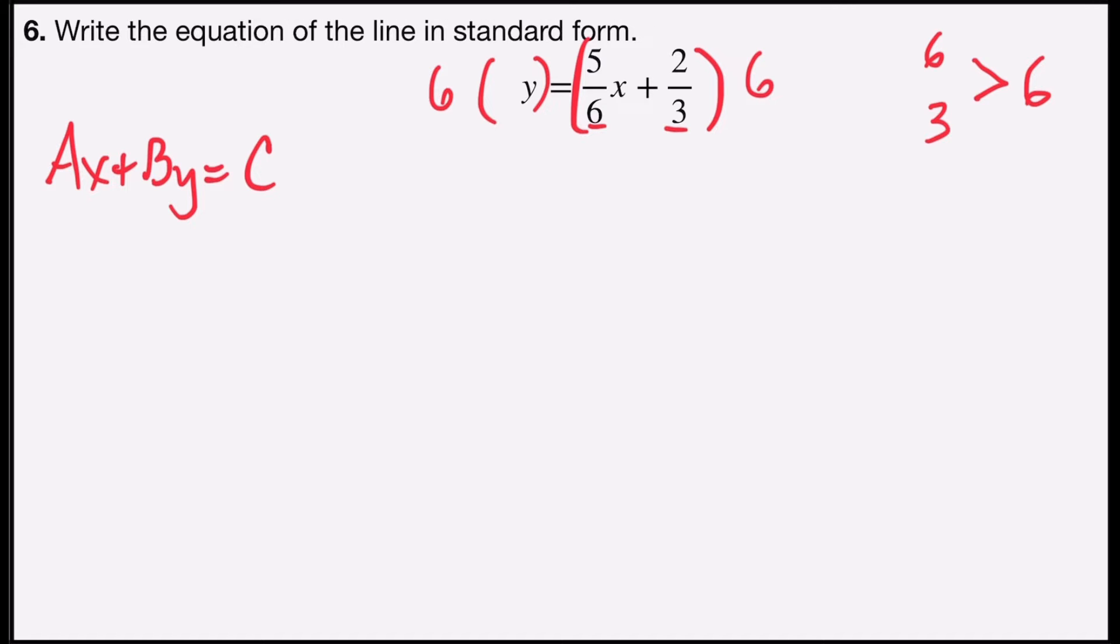On the left side, 6 times y is 6y. On the right side, 6 divides into 6 one time, and 1 times 5 is 5x, plus 3 divides into 6 twice, and 2 times 2 is 4.